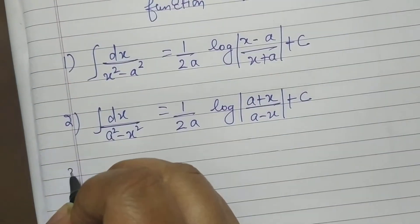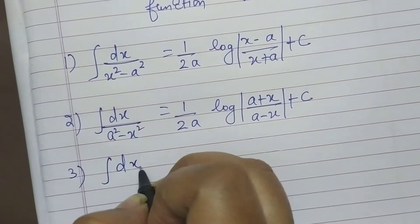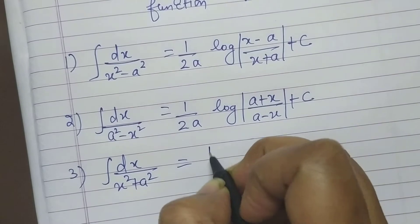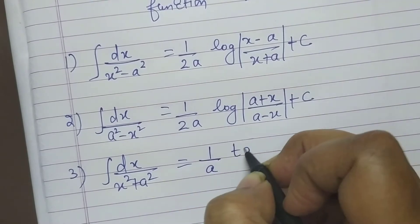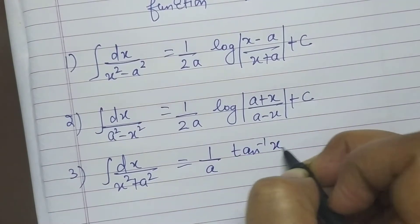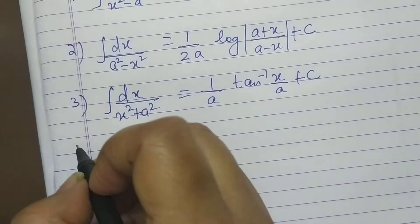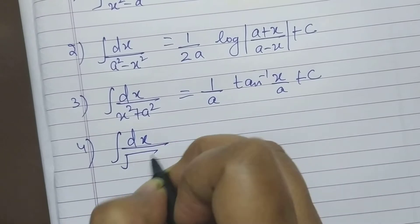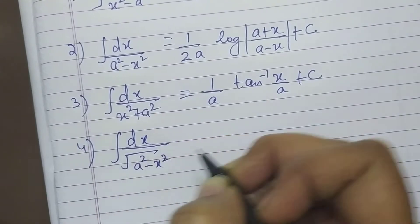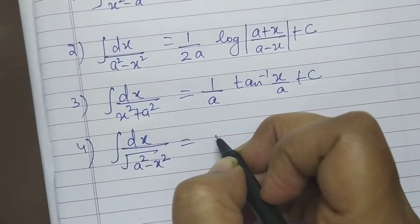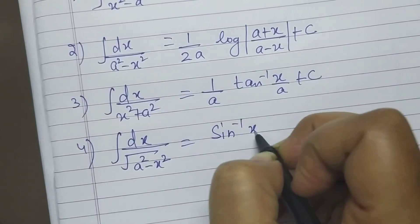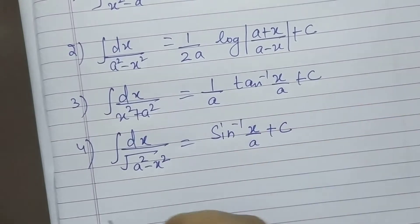Next formula: dx upon x² plus a² equals 1/a · tan⁻¹(x/a) + c. Next: dx upon √(a² − x²) equals sin⁻¹(x/a) + c.